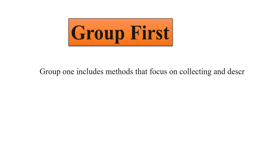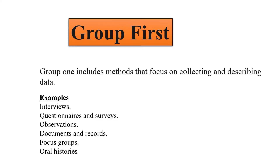Research methods are basically classified into three groups. Group one includes methods that focus on collecting and describing data — methods that are only concerned with data collection and describing data. For example: interviews, questionnaires, surveys, observations, documents and records, focus groups, and oral histories.